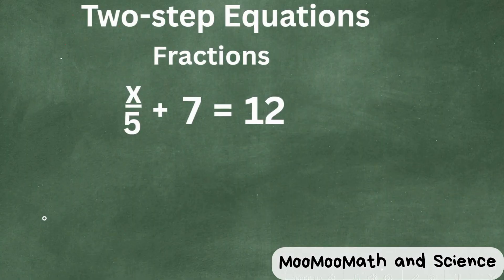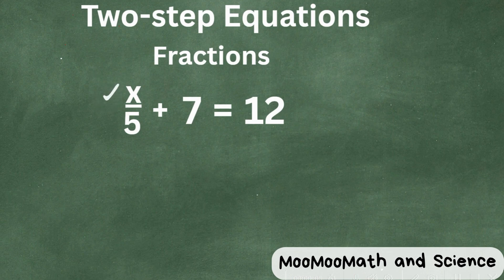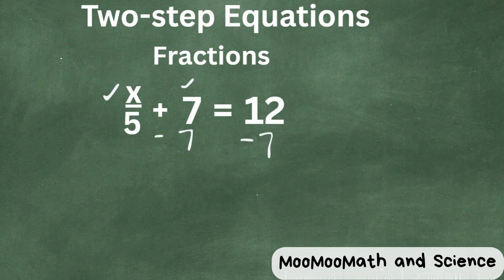In this example, notice that we have the x on top of the fraction. So we need to isolate the x. So the first thing we can do is we can move this 7 to the other side by subtracting 7 from each side. When we do this, a positive and negative 7 cancel.